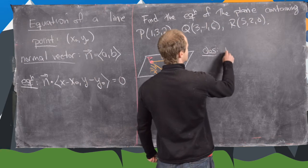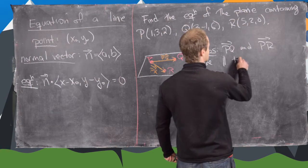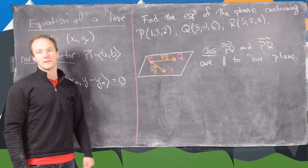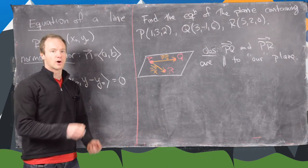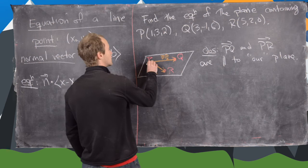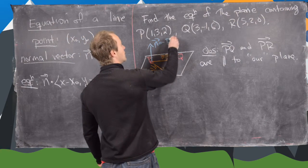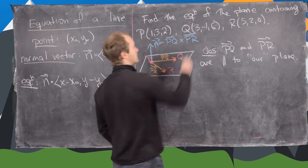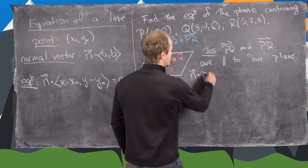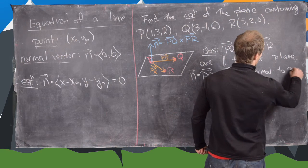The key observation is that the vector from P to Q and the vector from P to R are both parallel to our plane. But that means if we take their cross product, we get a vector that is perpendicular to our plane — remember, the cross product of any two vectors gives a vector perpendicular to both of them. So we let N equal PQ cross PR, and that vector N is normal or orthogonal to our plane.